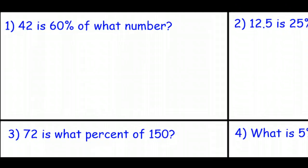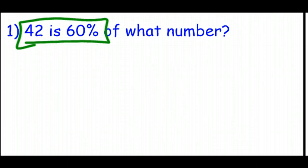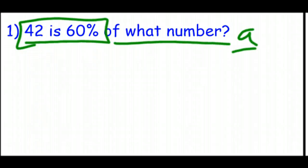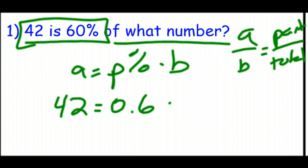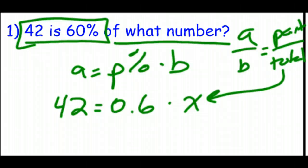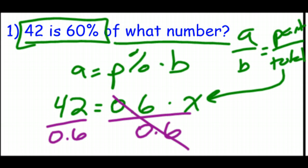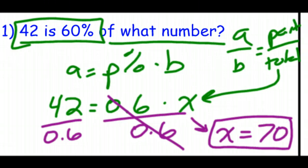For number one: 42 is 60% of what number? 42 represents the part. Using A equals P percent times B: A is 42, P is 0.6, and B is unknown — that's our X. So 42 equals 0.6 times X. Divide both sides by 0.6 to get X alone. 42 divided by 0.6 gives us 70. The unknown total X equals 70.